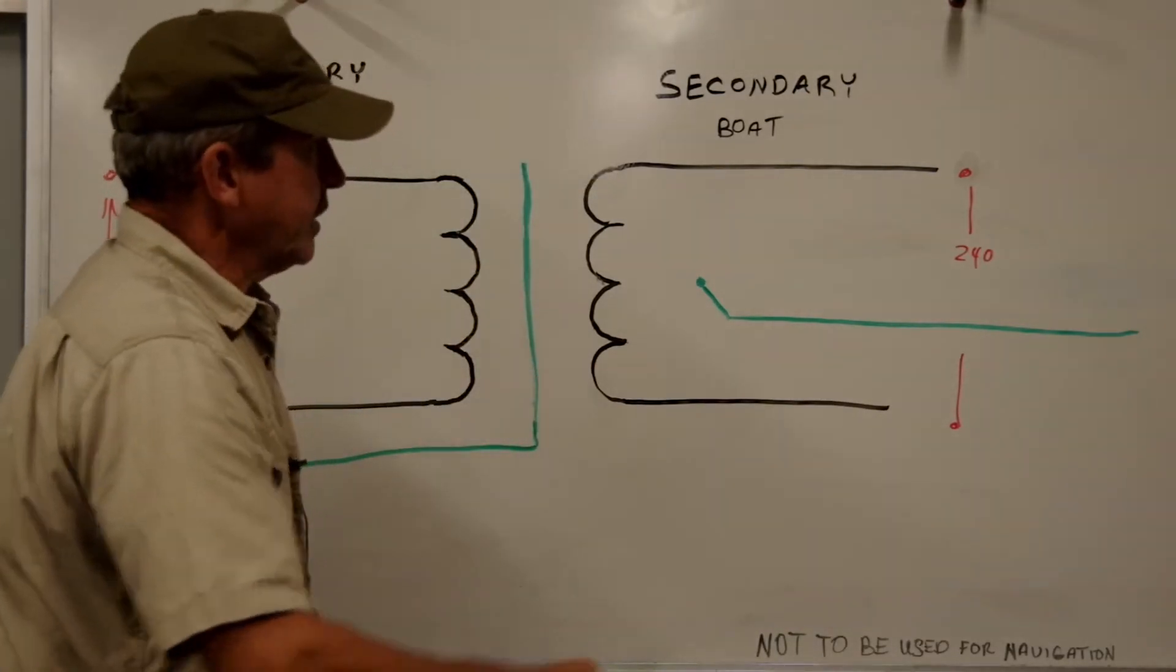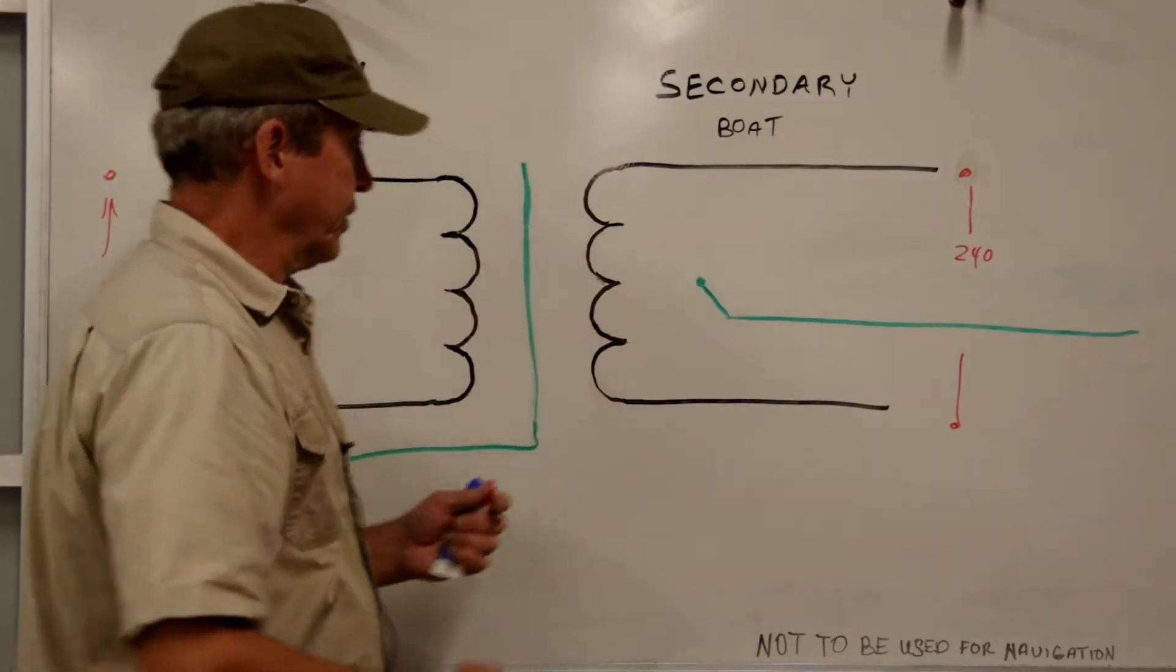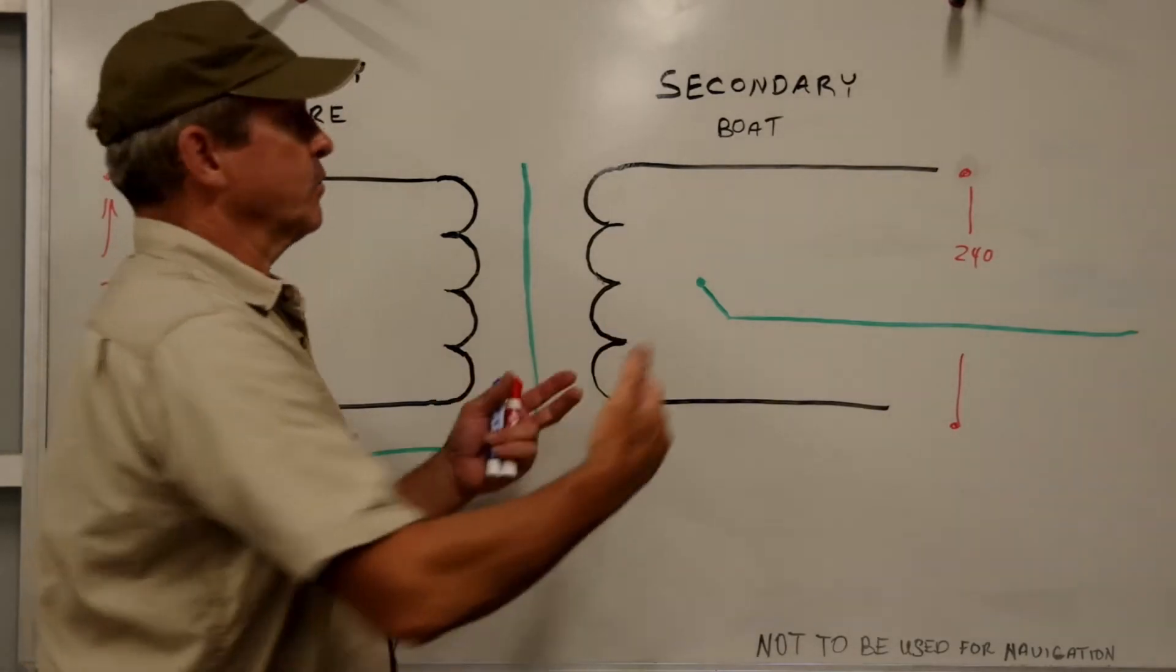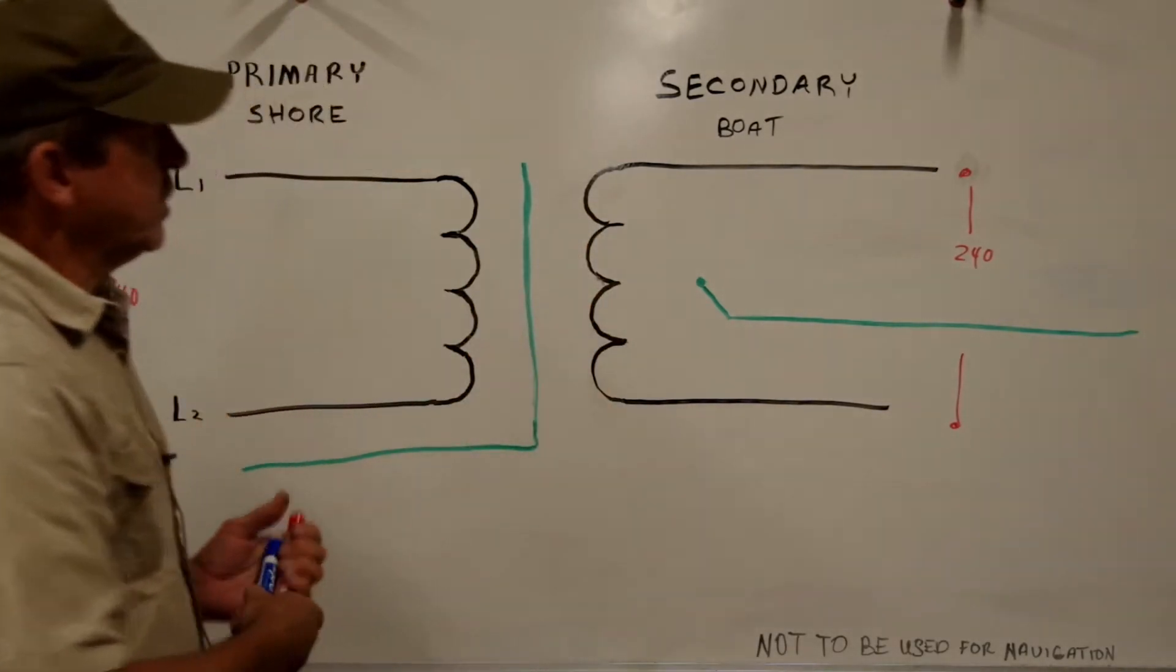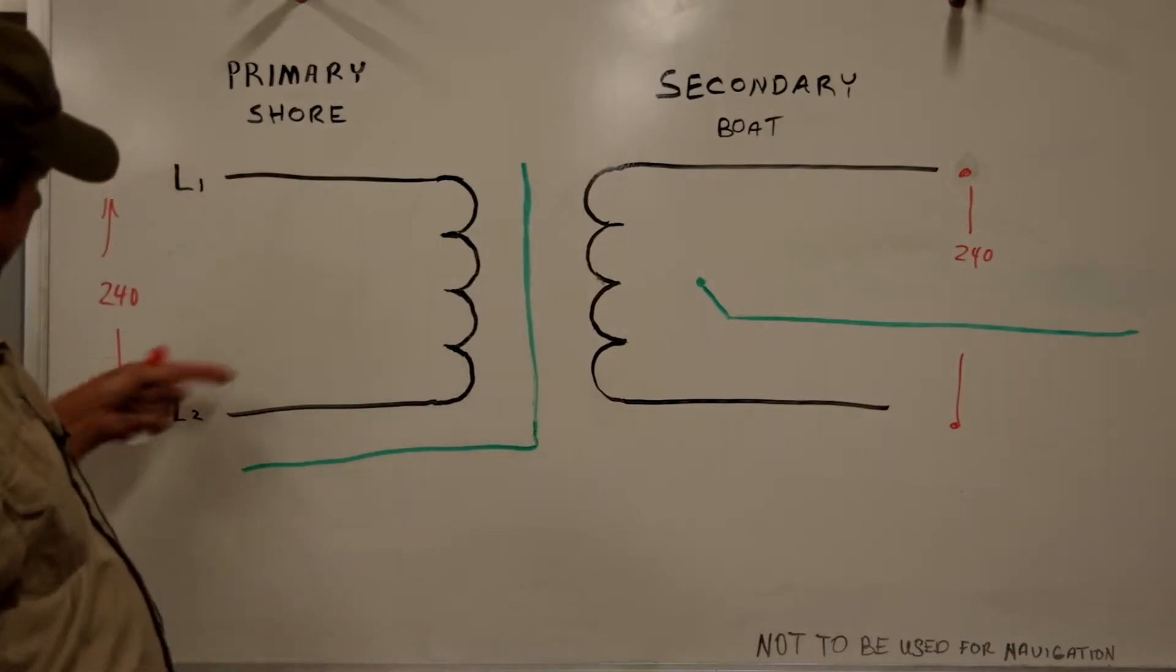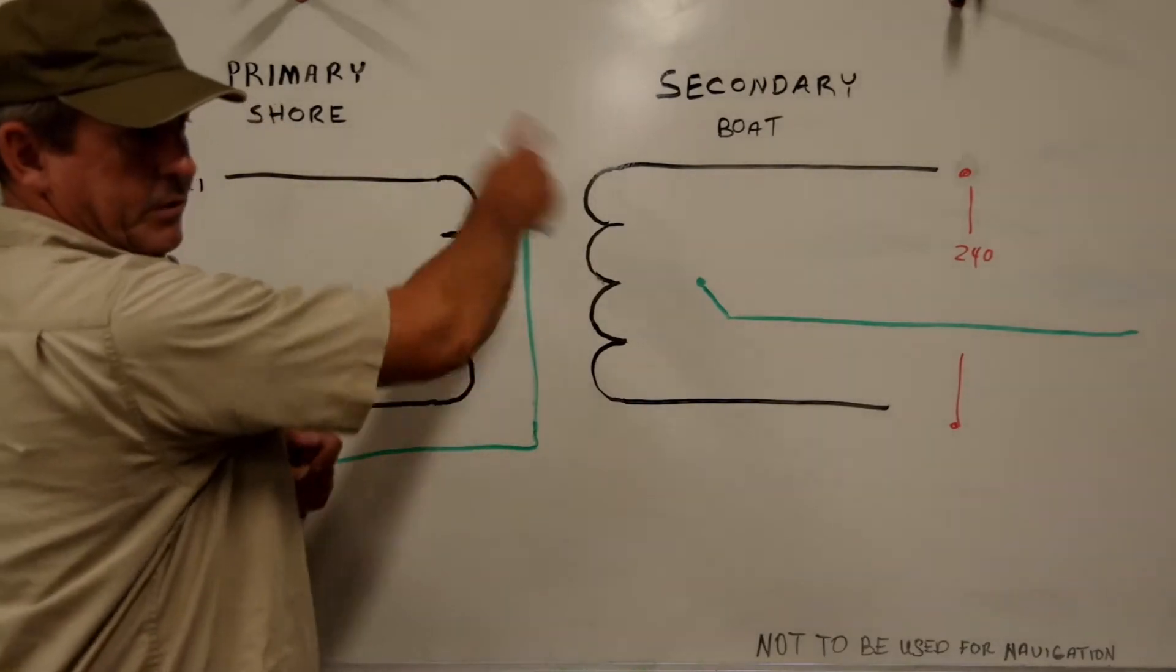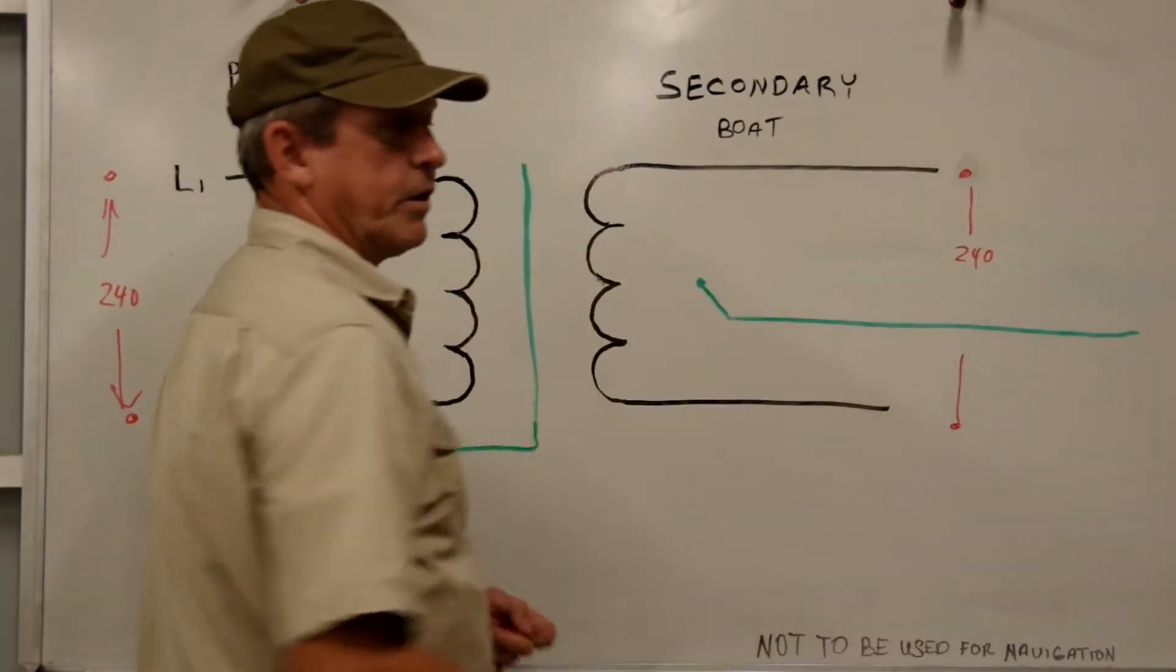Now, we can use this to—if we add some extra windings down here, we can increase the voltage on the secondary side. If we decrease the number of windings on the secondary side, we can lower the voltage. So we can add some windings, we can get a boosting transformer. We can take away windings, we can reduce the voltage coming out, which is handy for us because over here we have 240 volts coming in on our primary side.